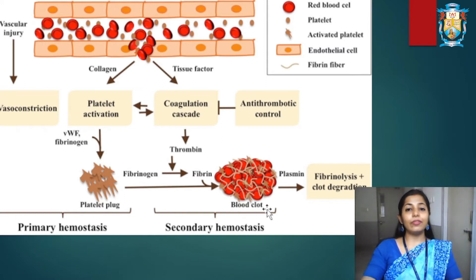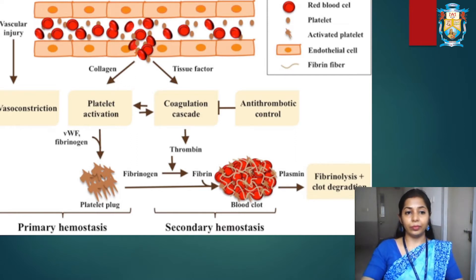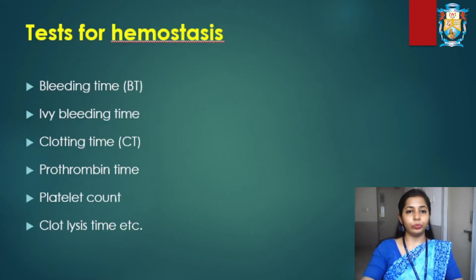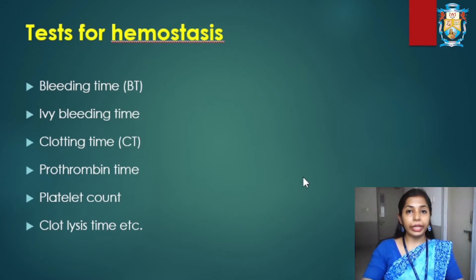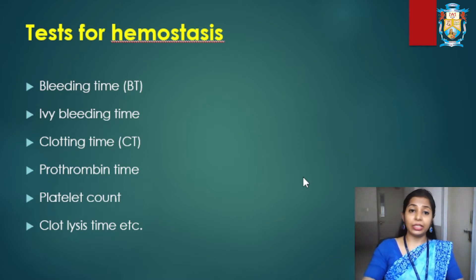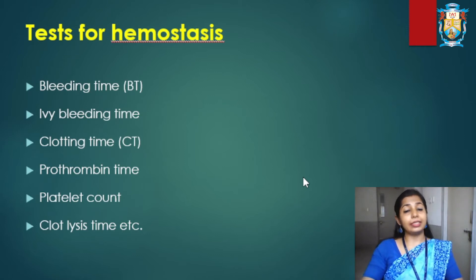These are the steps which occur during bleeding to stop the flow. There are many tests for hemostasis, such as bleeding time, IV bleeding time, clotting time, prothrombin time, platelet counts, and clot lysis time.